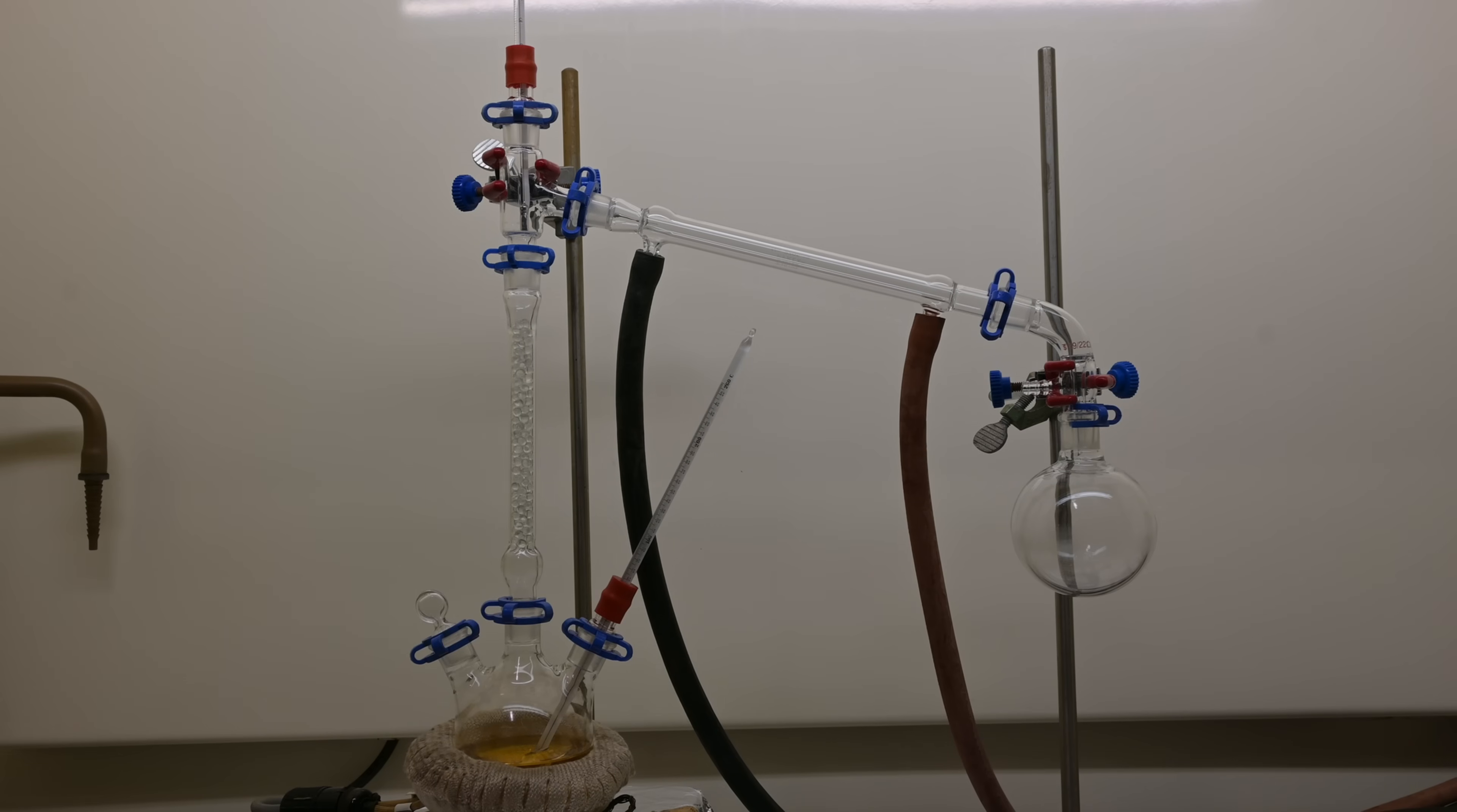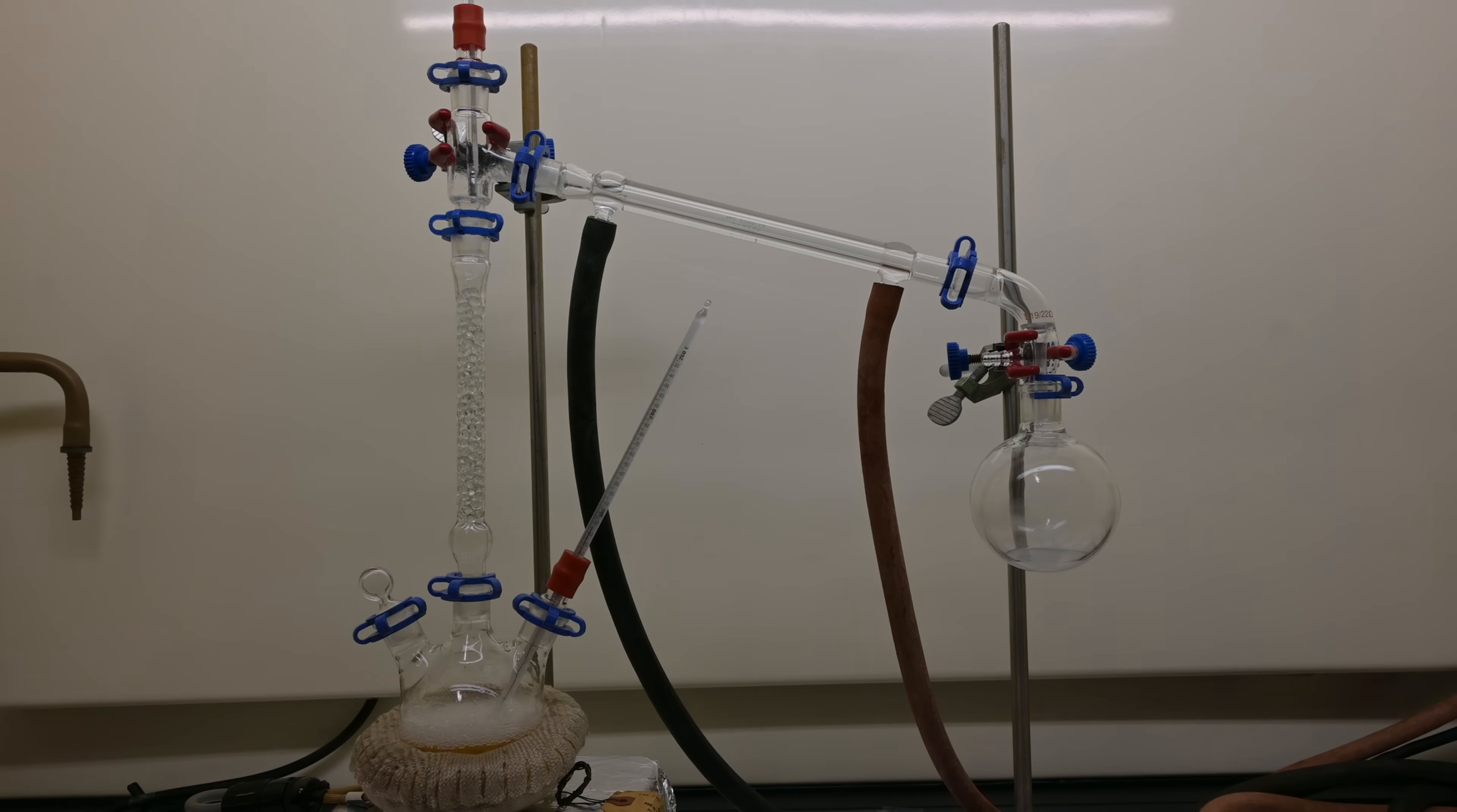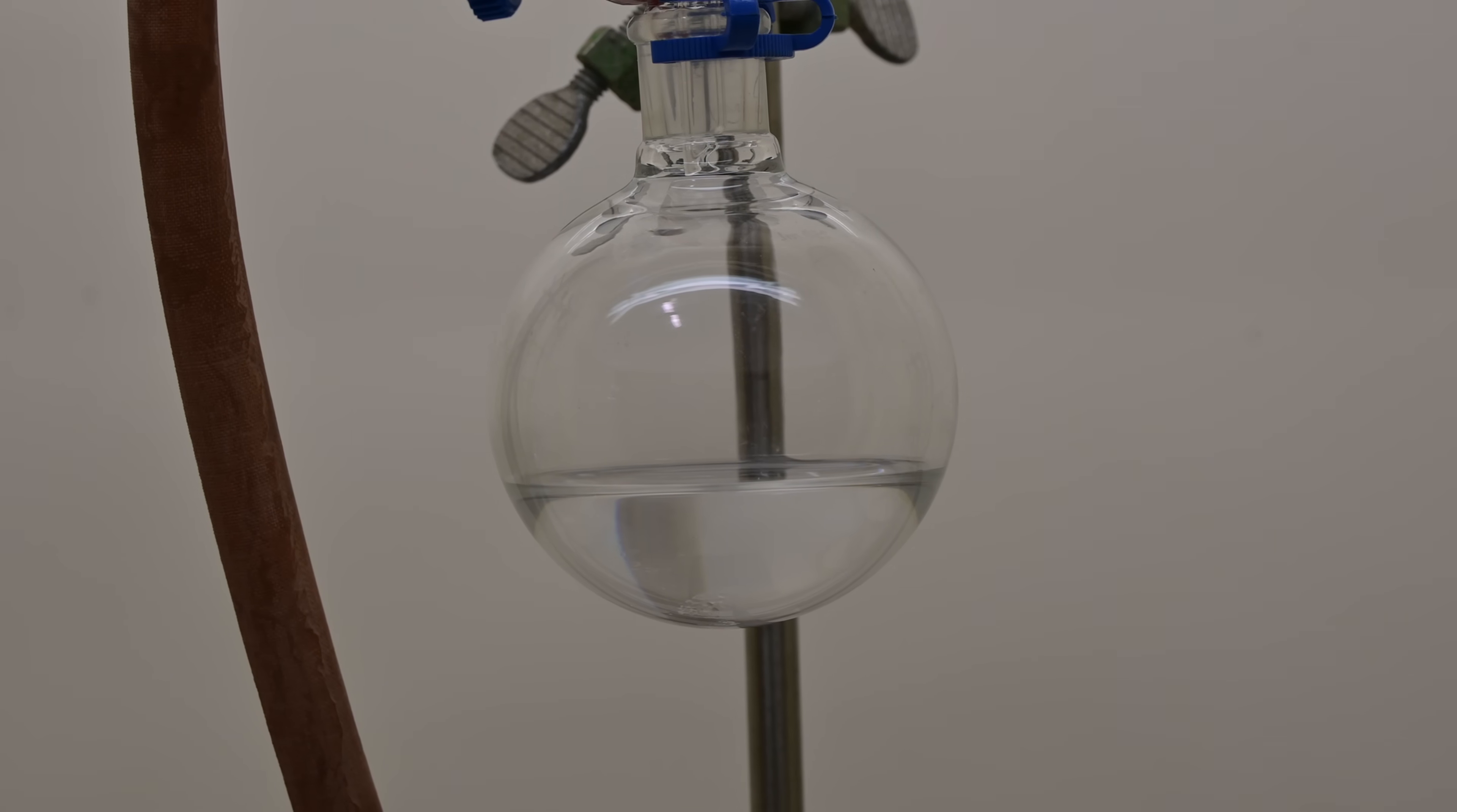I set up a simple distillation apparatus with a packed column full of glass beads and a thermometer dipping into the liquid. I begin heating and collecting the distillate until the temperature of the liquid reaches 100 degrees Celsius and the vapor at the top of the column reaches about 85 degrees Celsius. This removes any of the benzene and other low boiling point impurities.